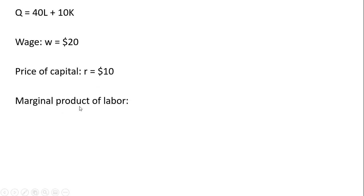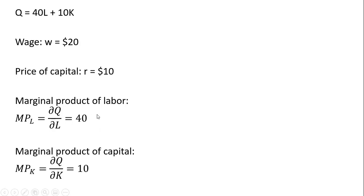The first thing we'll get is the marginal product of labor. We're going to take the partial derivative of the production function with respect to labor and we get back 40. Without using calculus, it'll always be the parameter in front of the L term. And the marginal product of capital will be 10, just the partial derivative of the production function with respect to capital. With a perfect substitutes production function, it'll just be the parameter in front of the variable K.